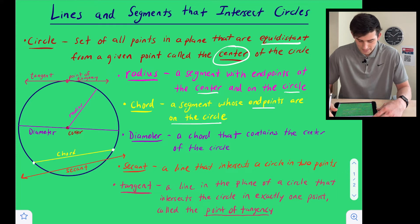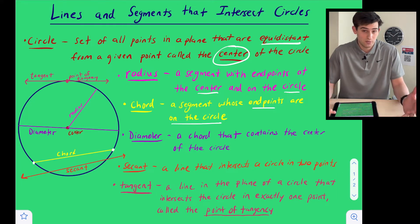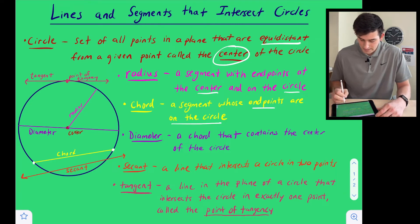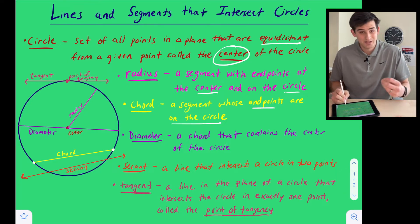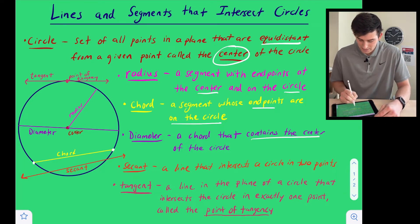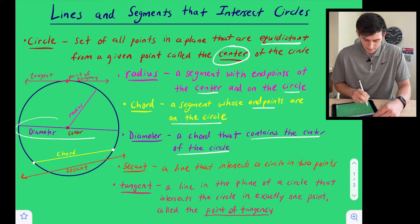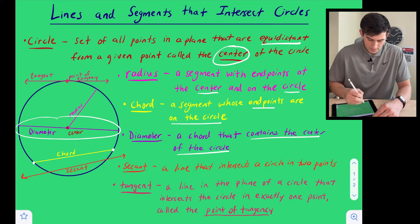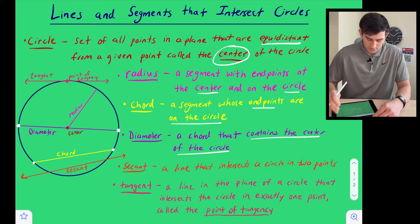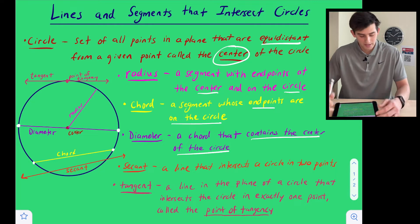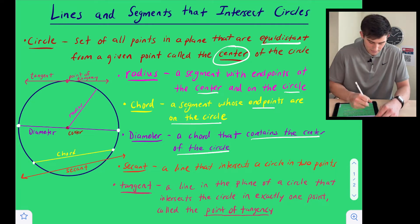Next is the diameter. A diameter is a chord because both of its endpoints are on the circle. However, the diameter is a specific chord because it contains the center of the circle. Here's our diameter right here — we can see that the endpoints of the diameter are on the circle, but it does pass through our center.